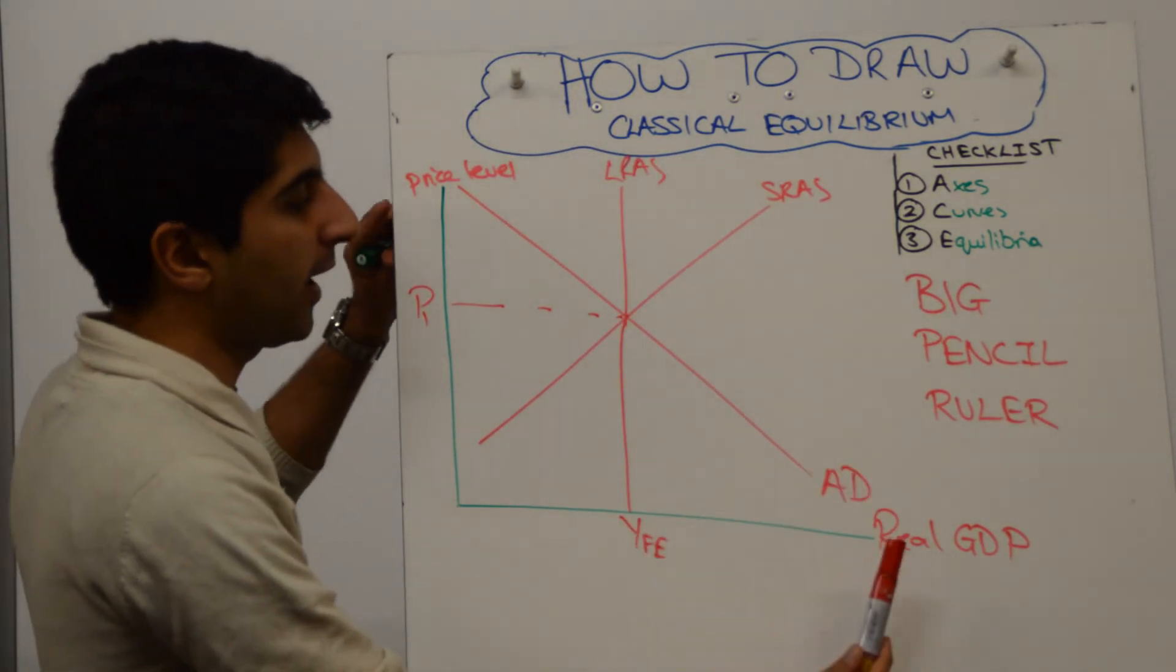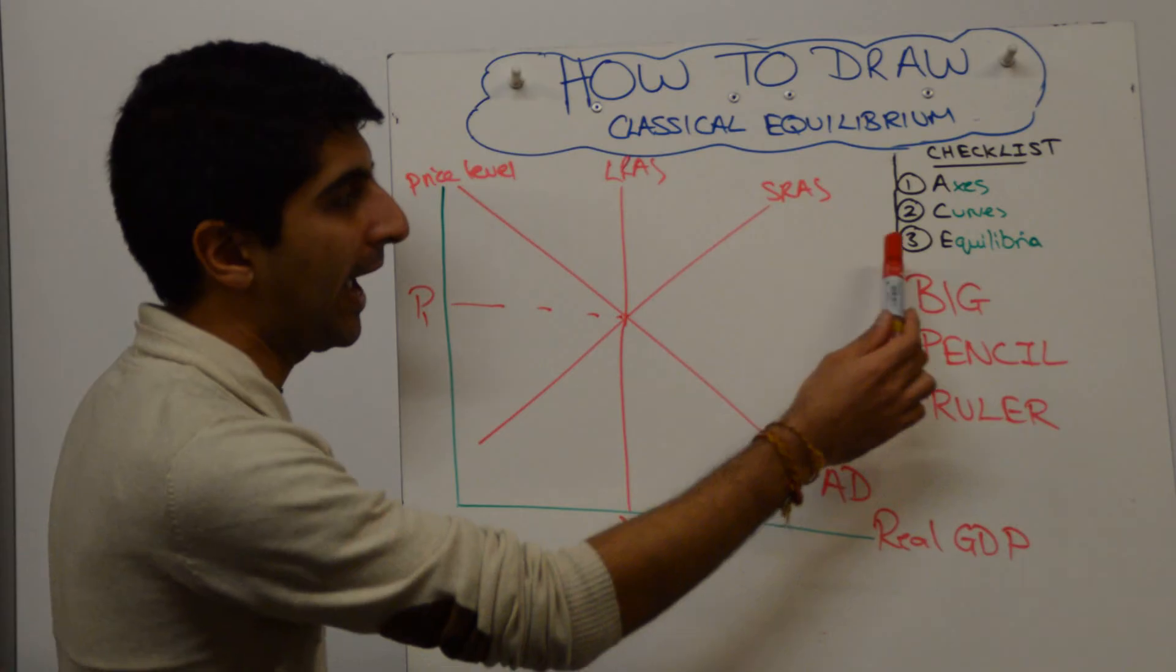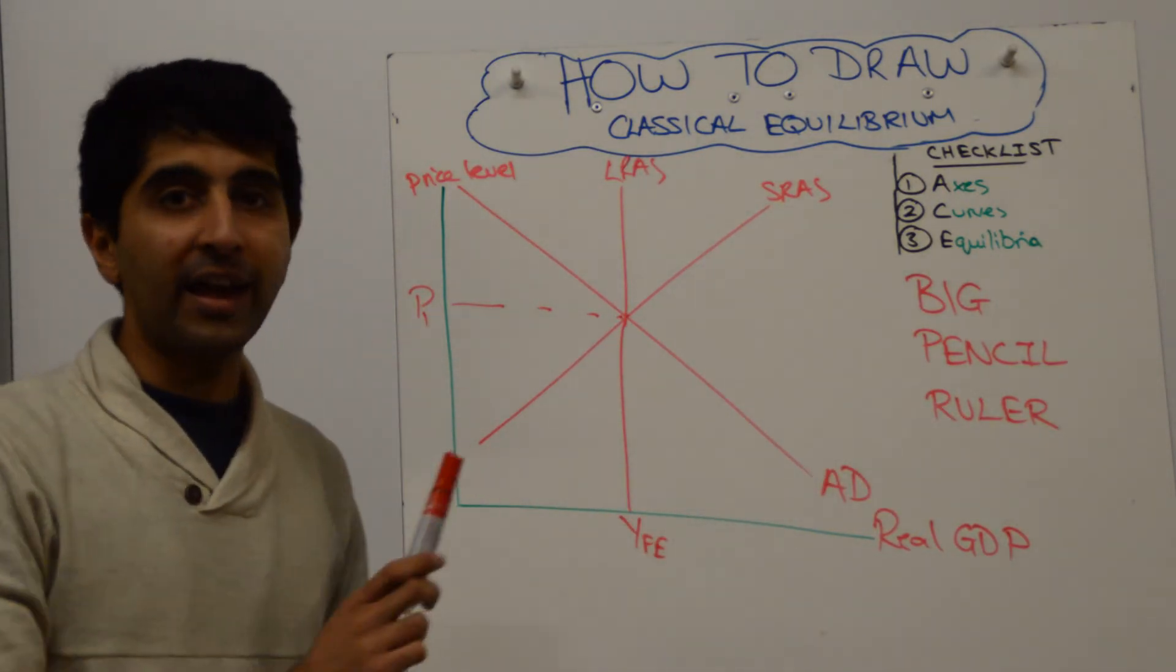Have we aced the diagram? We've labelled our axis, we've labelled our curves, and we've labelled the equilibria. That is full employment.